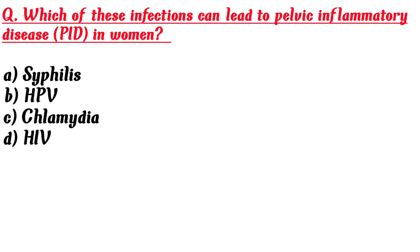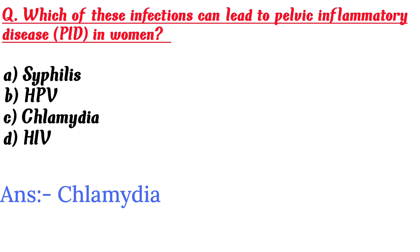Which of these infections can lead to pelvic inflammatory disease (PID) in women? A. Syphilis, B. HPV, C. Chlamydia, D. HIV. Answer is Chlamydia.